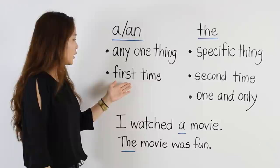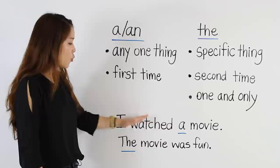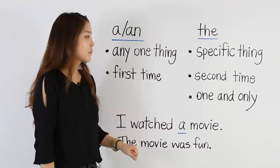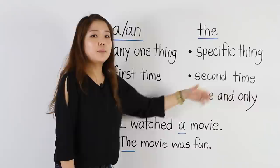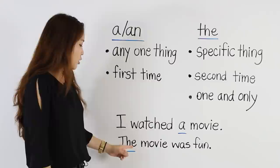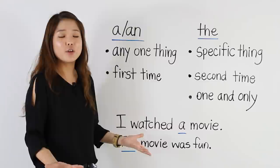We also use a or an when we're talking about something for the first time. For example: I watched a movie. I'm talking about this movie for the first time, so I use a movie. But if I want to talk about this movie again — the second, third, fourth time — I have to use the. The movie was fun. I can't say a movie was fun, because that means all movies are fun. That's not true. The movie was fun.